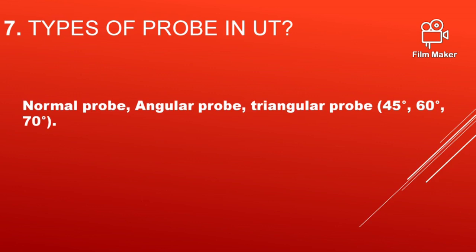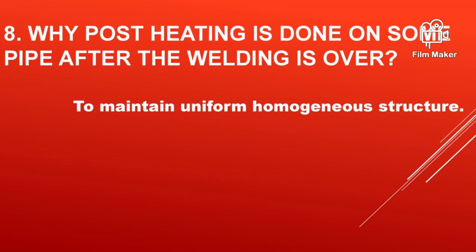What are the types of probes in UT? They are normal probe and angular probe. Angular probes are available in 45 degree, 60 degree, and 70 degree. Also, 30 degree and 90 degree angular probes are also available.